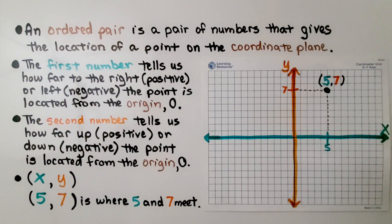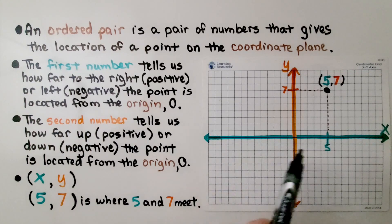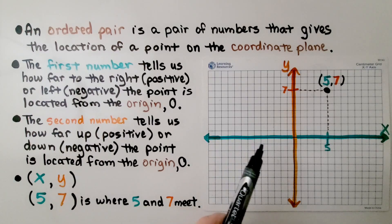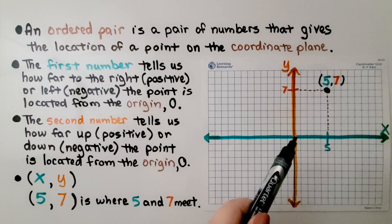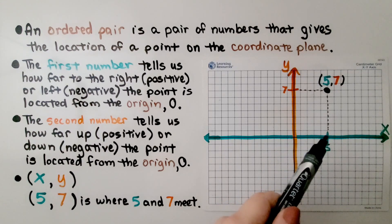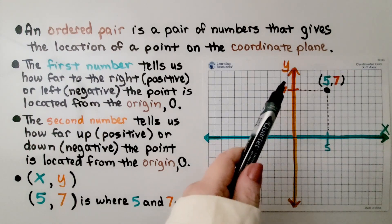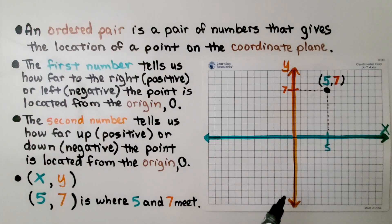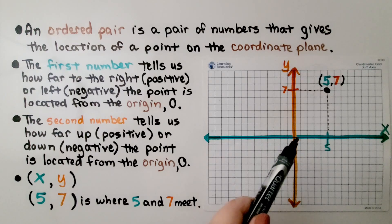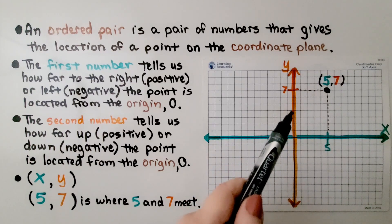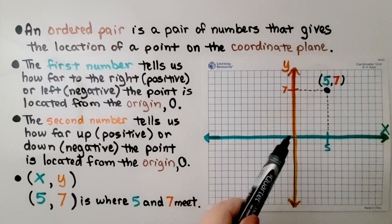An ordered pair is a pair of numbers that gives the location of a point on the coordinate plane. The first number tells us how far to the right — which would be positive — or to the left — which would be negative — the point is located from the origin zero. So if it's a positive five, it's going to be over on the right side. The second number tells us how far up, which would be positive, or down, which would be negative, from the origin. So a positive seven would be seven from the origin.